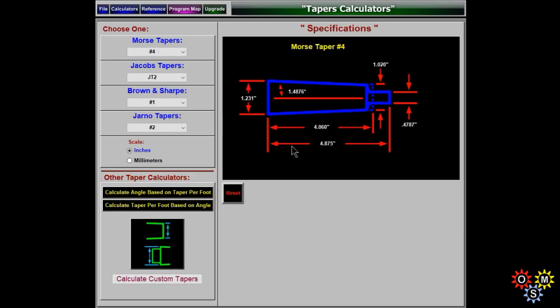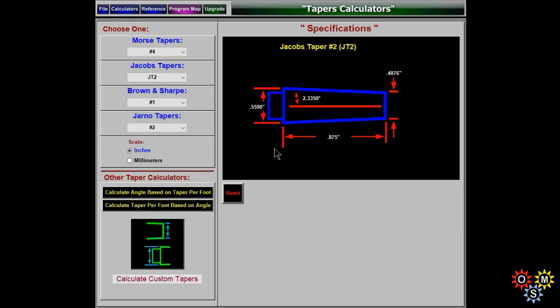Now some taper calculators and information, which is extremely useful. Morse tapers, number two first. And then a number four. If you're wanting to turn a male or female to this pattern, very useful. Jacob's taper, number two, fairly common. And of course you can have metric dimensions if you want. Also you can calculate angles based on taper per foot, or taper per foot based on angles.